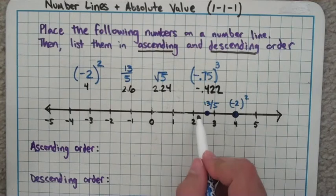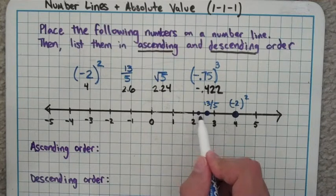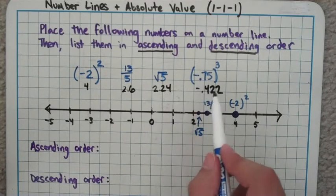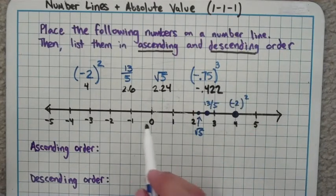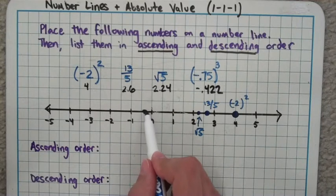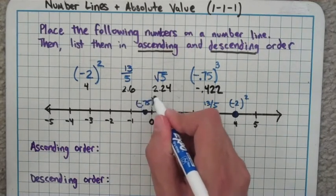Square root of 5 is about 2.24. That'd be just shy of, there's 2.5 again. 2.25 would be the halfway point, so it should be just shy there. So that's going to be my square root of 5. And negative 0.75 to the third power, negative 0.422. That's negative 0.5, so it'd be a little less than that, like right there. Negative 0.75 to the third.